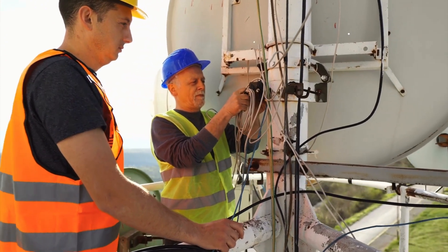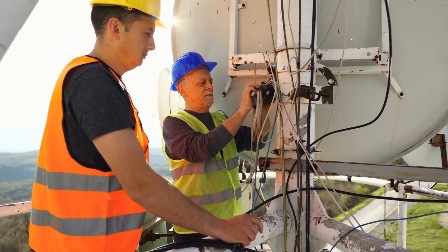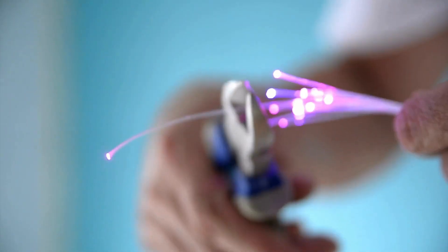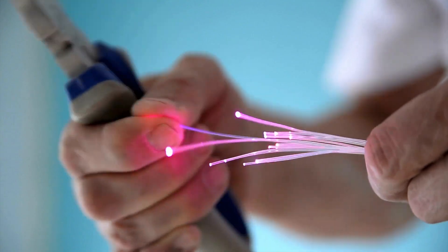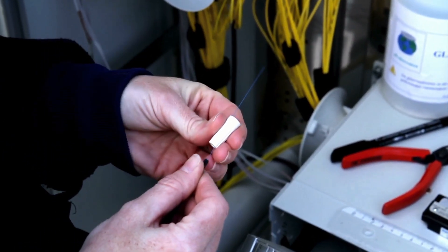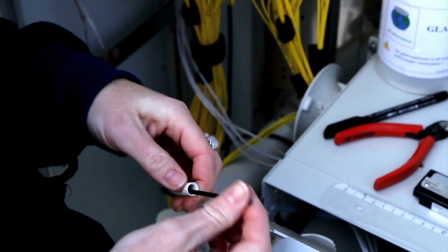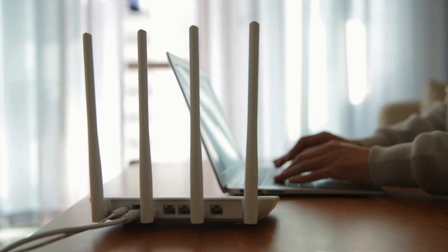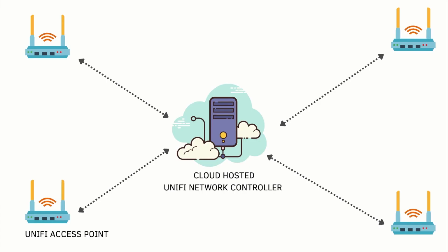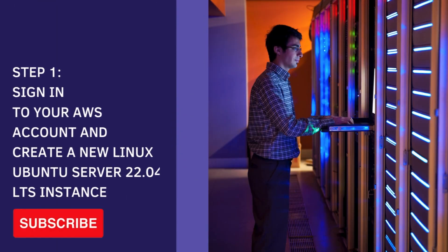It allows you to configure and control your network — from adopting and setting up wireless access points, configuring core network functionality such as DNS and DHCP, to setting up VPN links, as well as advanced network-level functionality such as RADIUS servers. I've also prepared a diagram that will depict what we're trying to achieve here. We're going to have a single cloud-hosted Unified Network Controller deployed on the Amazon EC2 service, and that can then be used to control multiple Unified access points spread across multiple different physical locations.